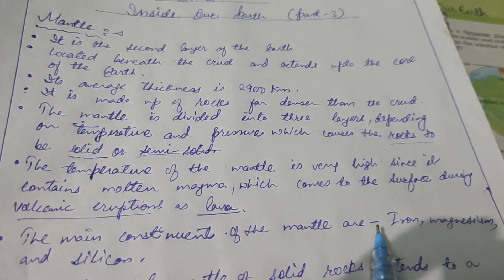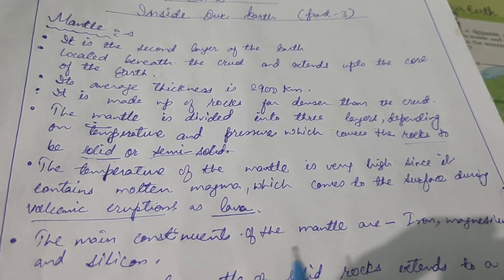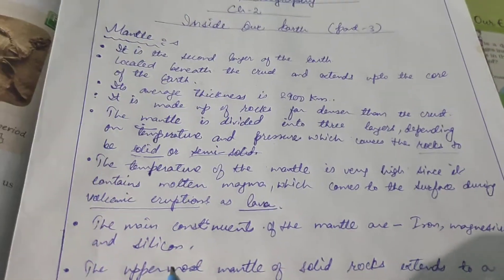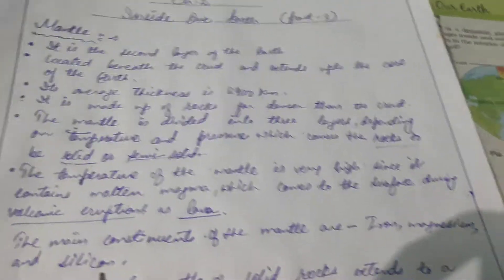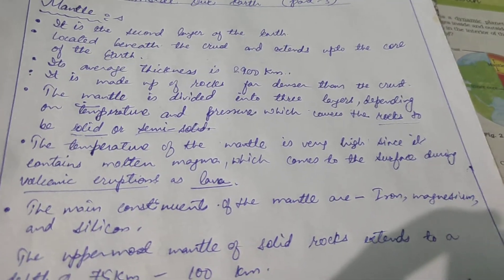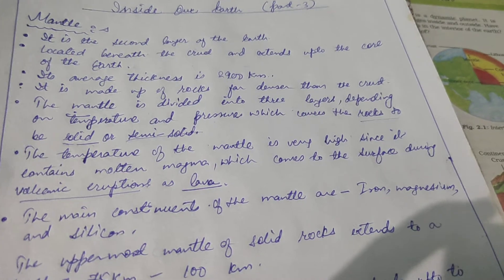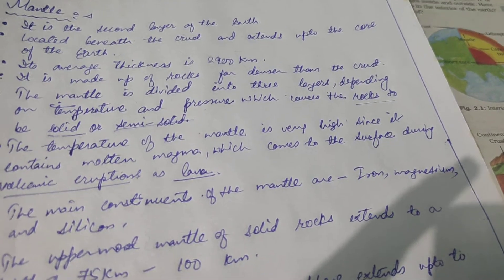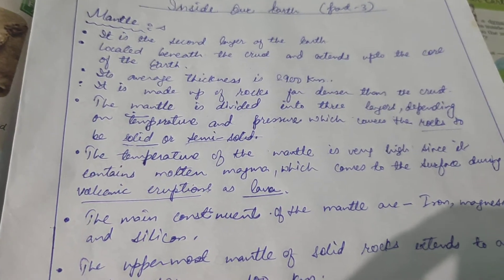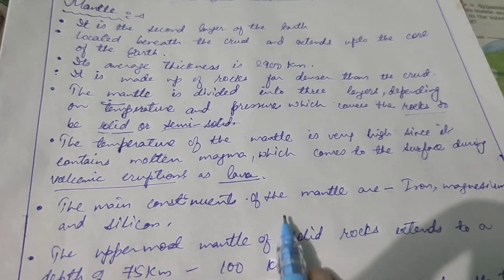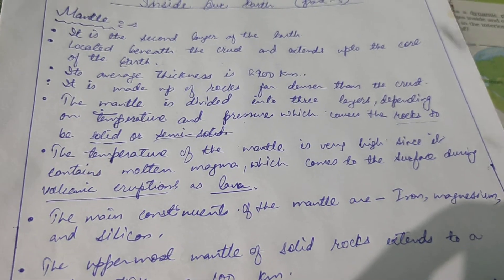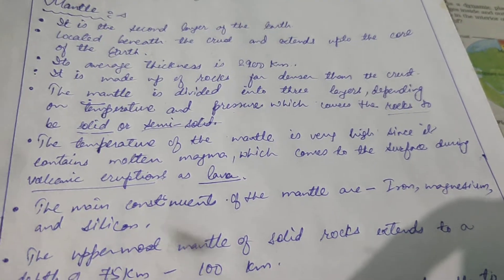The main constituents of the mantle are iron, magnesium, and silicon. In the crust, the minerals found were silica, magnesium, and aluminium — Sema and Sial basically. Similarly, in the mantle, iron, magnesium, and silicon are found.